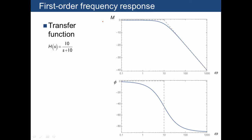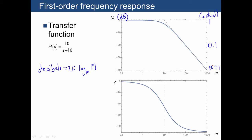Here's a computer-generated plot of the same thing — m versus omega and phi versus omega. One difference is that when plotting on a computer, it's customary to plot m in units of decibels (dB), where decibels are defined as 20 times log base 10 of m. Using real units: 0 dB corresponds to a magnitude of 1 (since log of 1 is 0), negative 20 dB corresponds to 0.1, and negative 40 dB corresponds to 0.01.